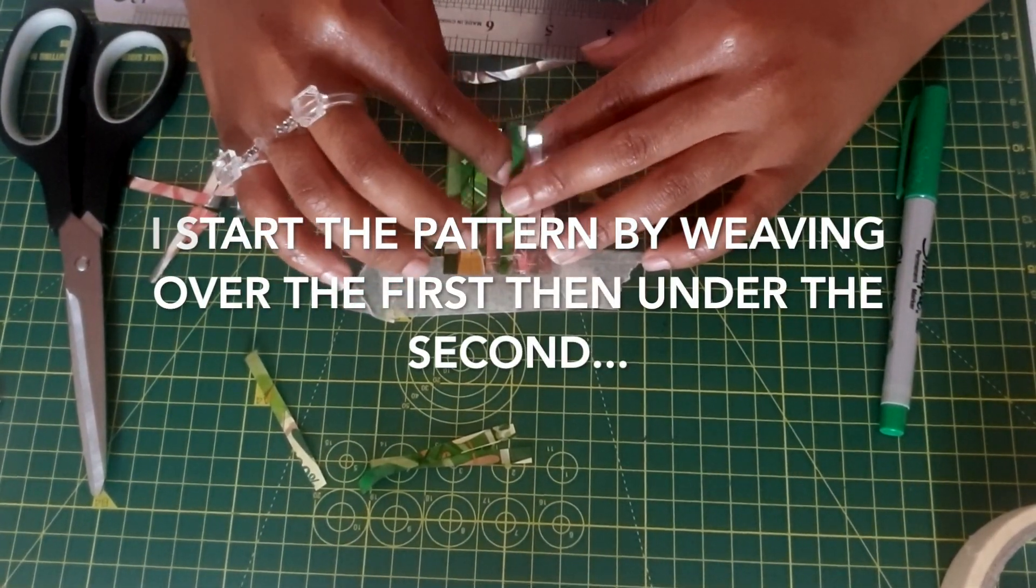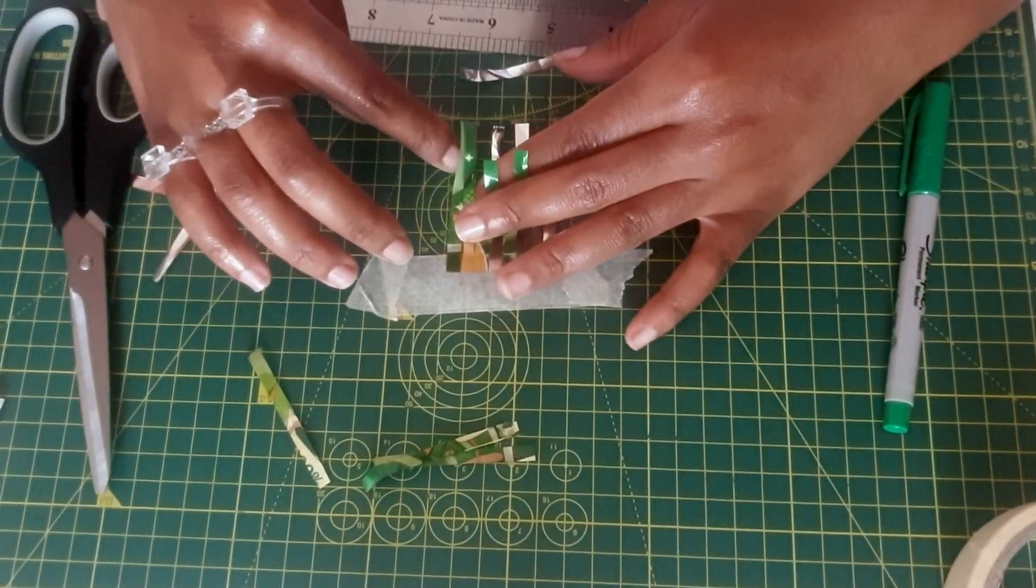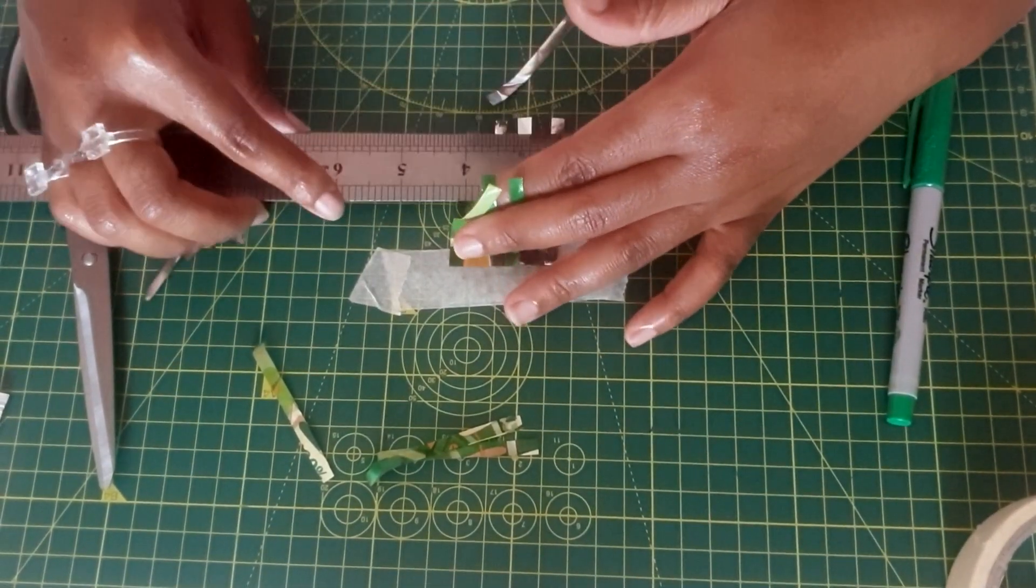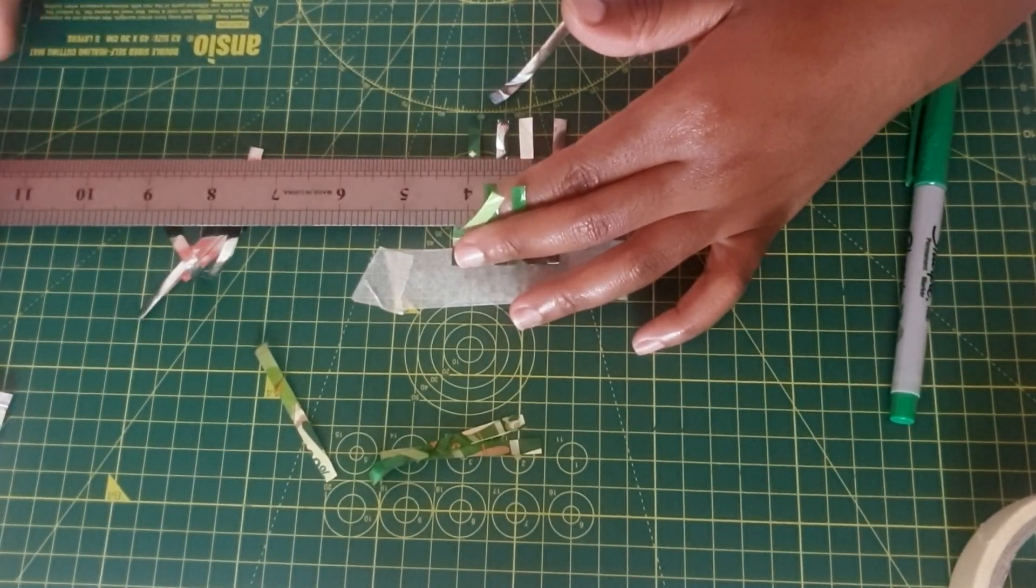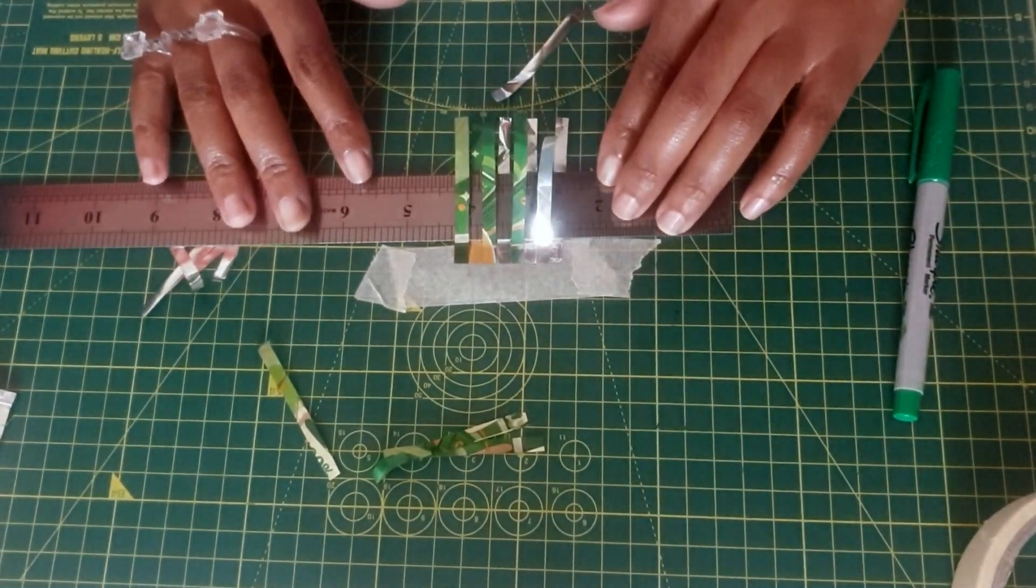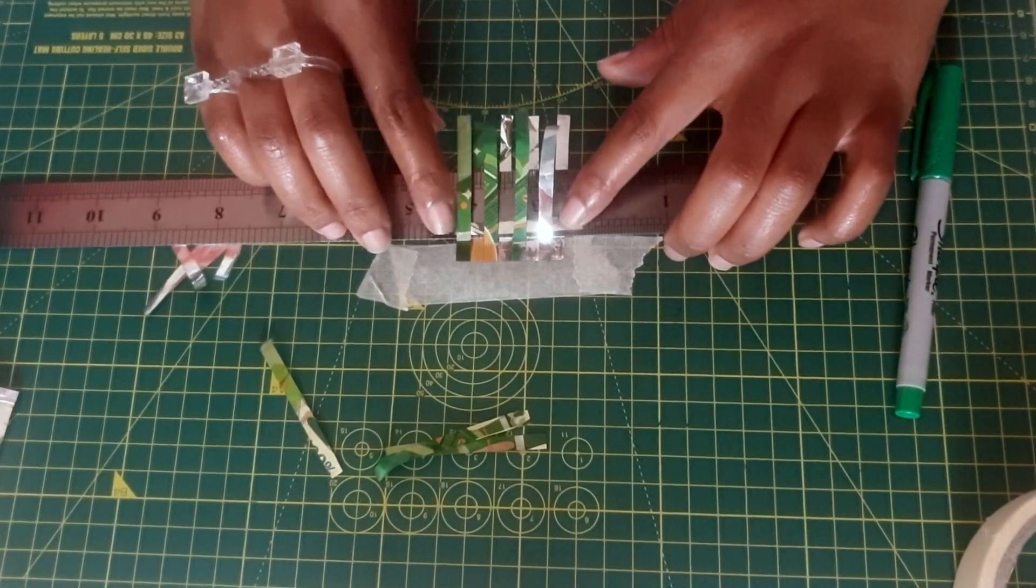As you can see from my example, using the ruler to keep the long ways strips in place definitely helped with putting the strips that are going across in place.